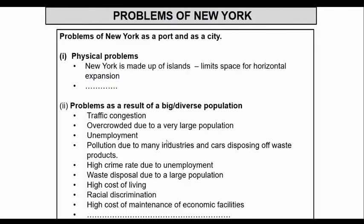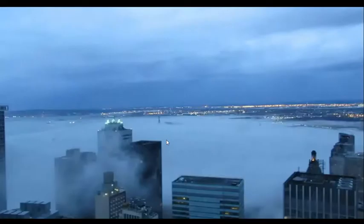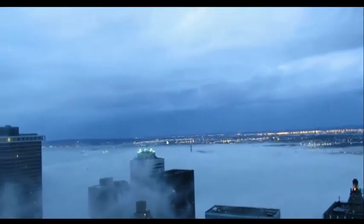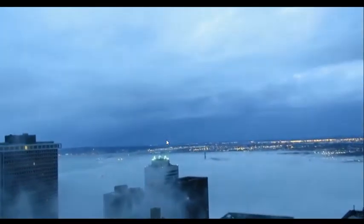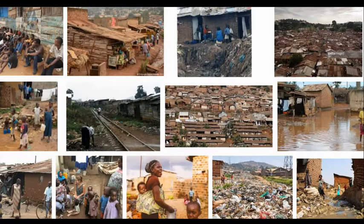We move further to identify the problems with our outline and look at the real problems. We go to another photo showing the fog over New York. We move further to look at the slums — a video of the slums here in South Bronx. That's a slum, and this is a slum of Uganda or East Africa.